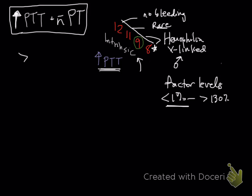Remember that PTT only prolongs when there's greater than 75% loss of factors. ACT won't be prolonged unless there's greater than 95% loss, so that's when you'd see an increase in your ACT. ACT will be prolonged in these same conditions, and again hemophilia is going to be the most common one with just your PTT elevation.